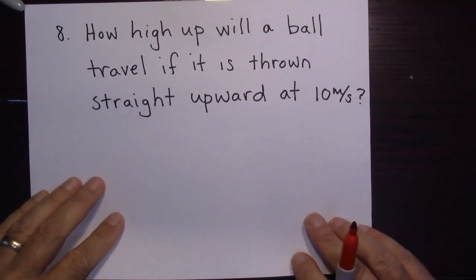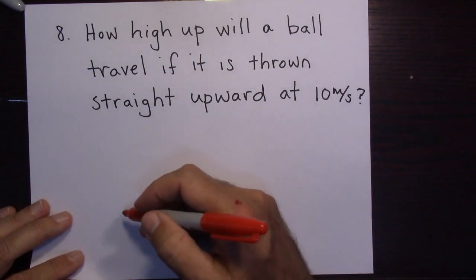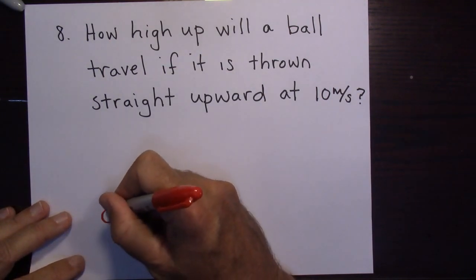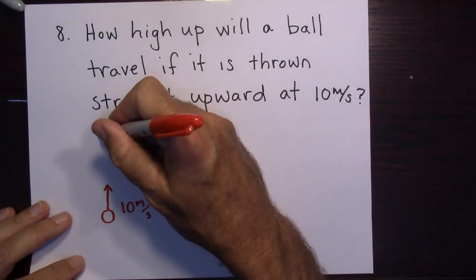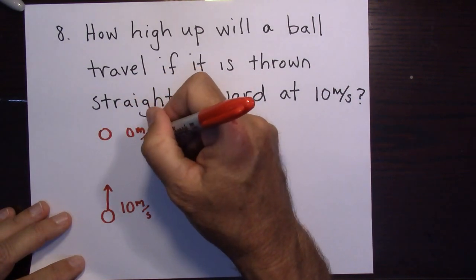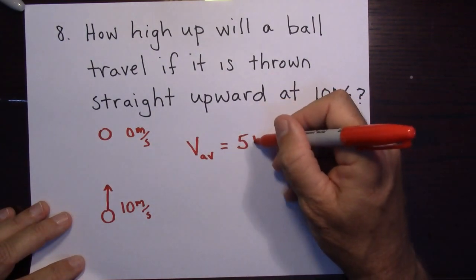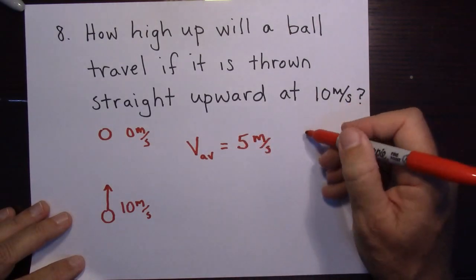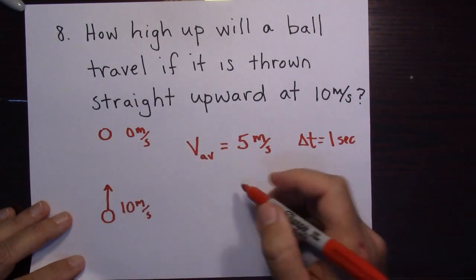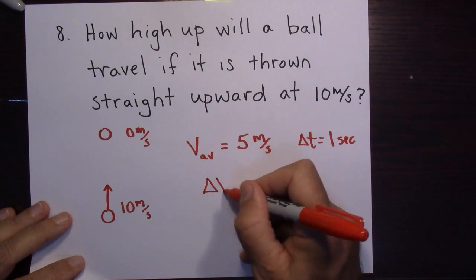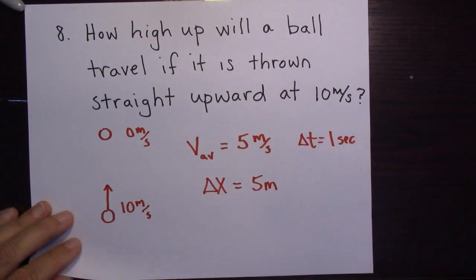Problem eight: how high up will a ball travel if thrown straight upward at 10 meters per second? At the very top it's going zero meters per second. The average velocity is five meters per second on the way up. It takes one second to get there — losing 10 m/s per second. Delta X equals five times one equals five meters up in the air.